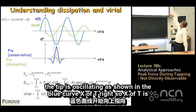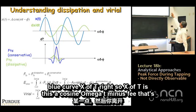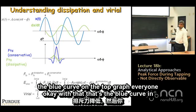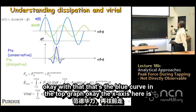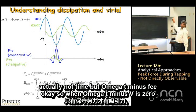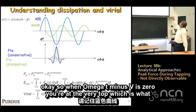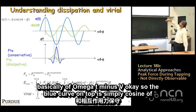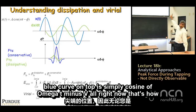The x-axis is ωt − φ, not time. When ωt − φ equals zero, you are at the very top of the cosine. The blue curve on the top graph is simply cosine(ωt − φ). That's how the tip is moving — when x becomes negative and goes down, that is when it is approaching the sample.